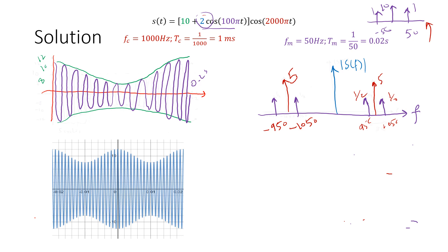For the bandwidth: the AM signal is double-sided. The original message frequency was 50 Hz, so the bandwidth is 2 × 50 = 100 Hz. We can verify by subtracting: 1050 − 950 = 100 Hz bandwidth.